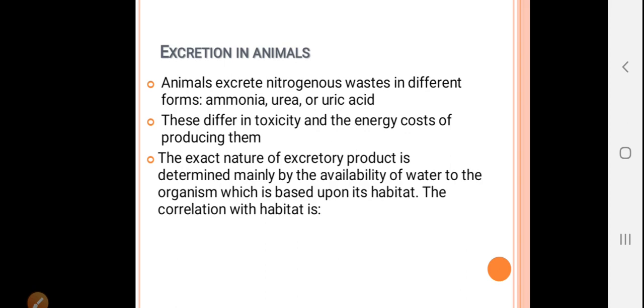The exact nature of excretory product is determined mainly by the availability of water to the organism, which is based upon its habitat. In aquatic forms they remove ammonia, and in terrestrial forms they remove urea or uric acid.